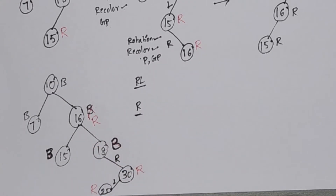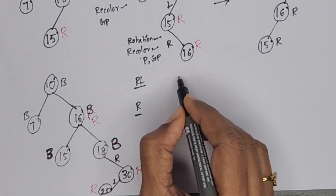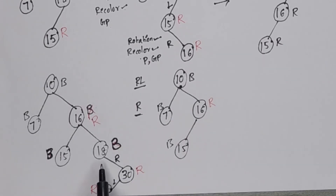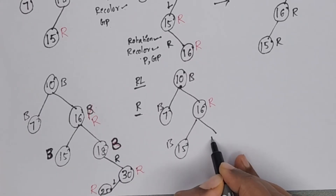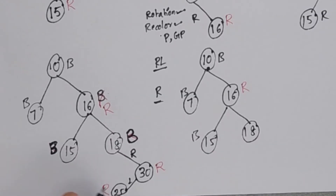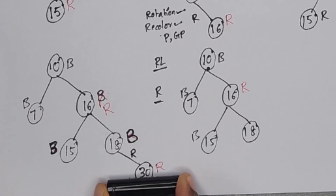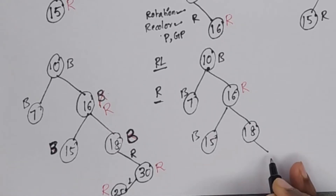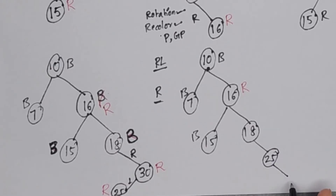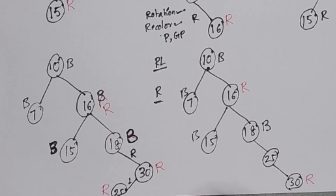For the R-L rotation, first perform R rotation. We do not rotate 18; the remaining two nodes (30 and 25) are rotated right. When rotated right, 25 goes up and becomes the right child of 18, and 30 becomes the right child of 25. Colors: 18 is black, 30 is red, 25 is red. This completes the first rotation.